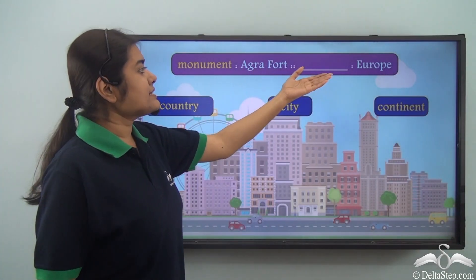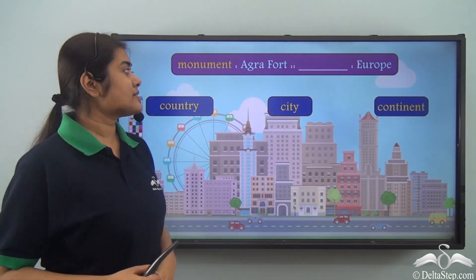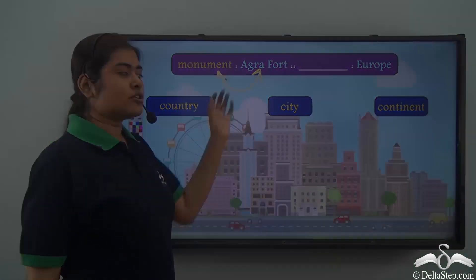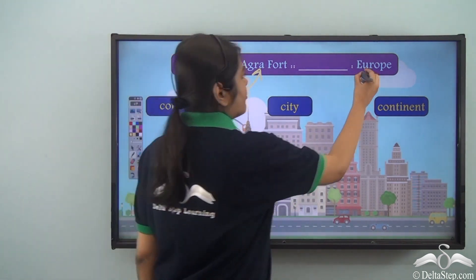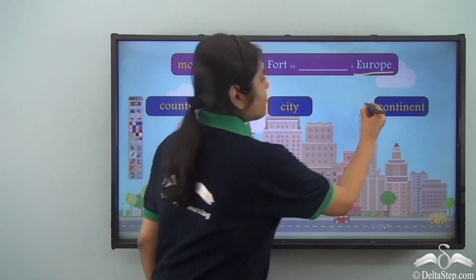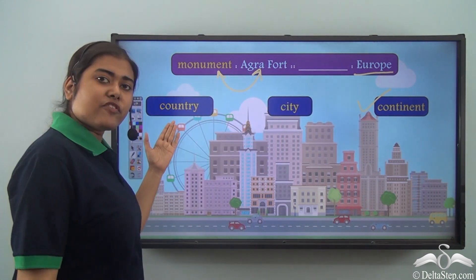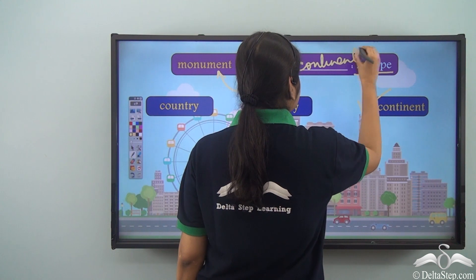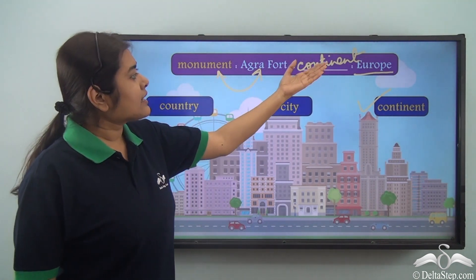Monument is to Agra Fort as dash is to Europe. The options are country, city, continent. Agra Fort is the name of a monument, so monument is a common noun and Agra Fort is a proper noun. Similarly, Europe is a proper noun — it is the name of a continent, not a country or a city. So the common noun that goes with Europe is continent. Our relation stands: monument is to Agra Fort as continent is to Europe.